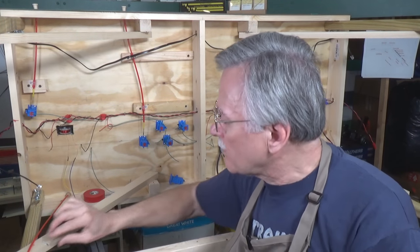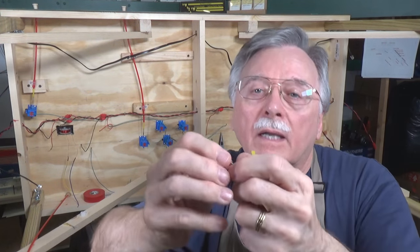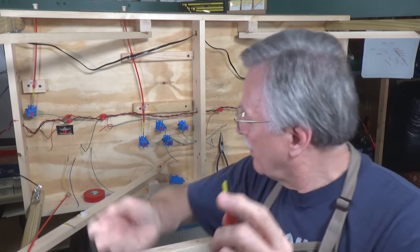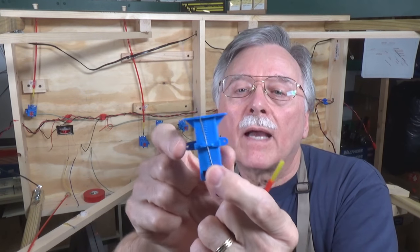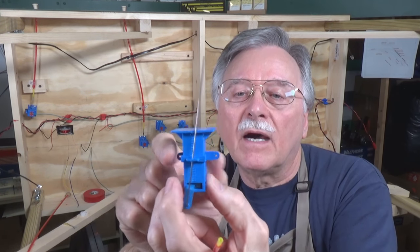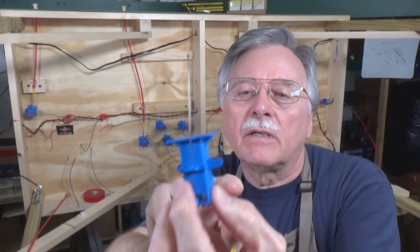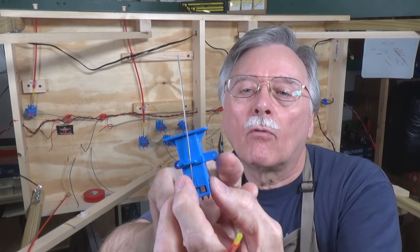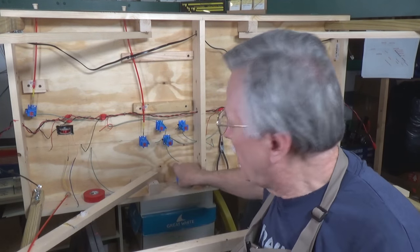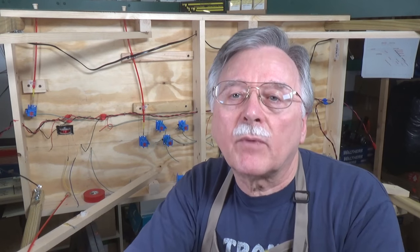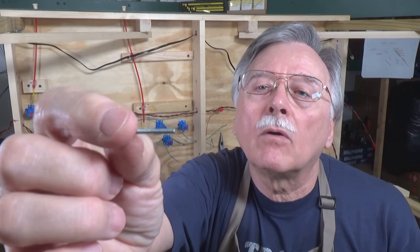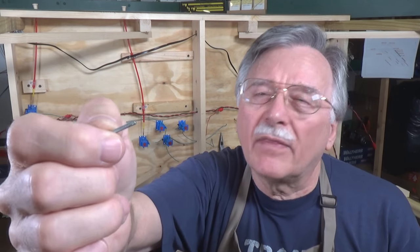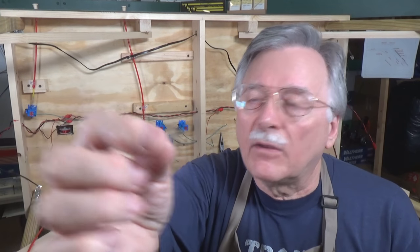Now, in order to connect this end to the activating arm here on the blue point switch machine, you can see it's got a small hole right here. In order to make that connection, we have to use this small little piece of steel wire that's threaded the entire length of it. These come in a package. I think there's about 20 in a package that blue point sells.